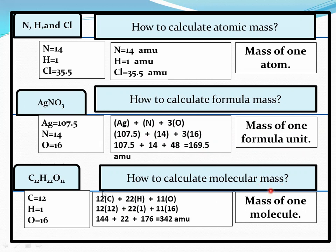Summary recap: molecular mass means mass of one molecule; atomic mass means mass of one atom; formula mass means mass of one formula unit; and molecular mass means mass of one molecule. Now we move on to gram atomic mass, gram molecular mass, and gram formula mass.